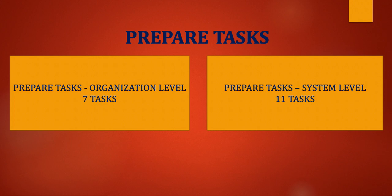The other portion of tasks under the preparation step is the system-level task, meaning there are some essential activities that need to be performed at the system level. Under the system-level task, there are 11 essential activities or tasks, although some are optional. One example of a system-level task is authorization boundary.